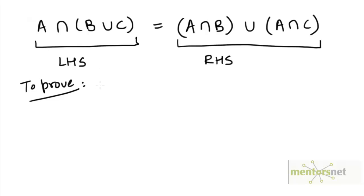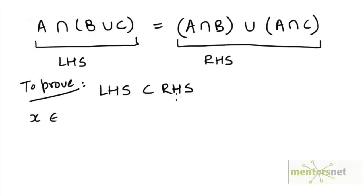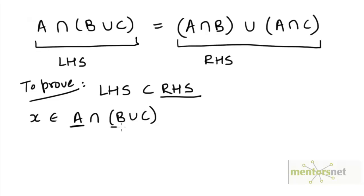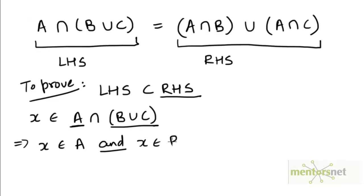To prove that the left hand side and the right hand side are the same set, we first prove that the left hand side is a subset of the right hand side. So let's pick an arbitrary element from the set on the left hand side and show that it belongs to the set on the right hand side. Let's say x belongs to A intersection (B union C). If x belongs to the intersection of these two sets, x must be a common element of both, so x belongs to A and x belongs to B union C.